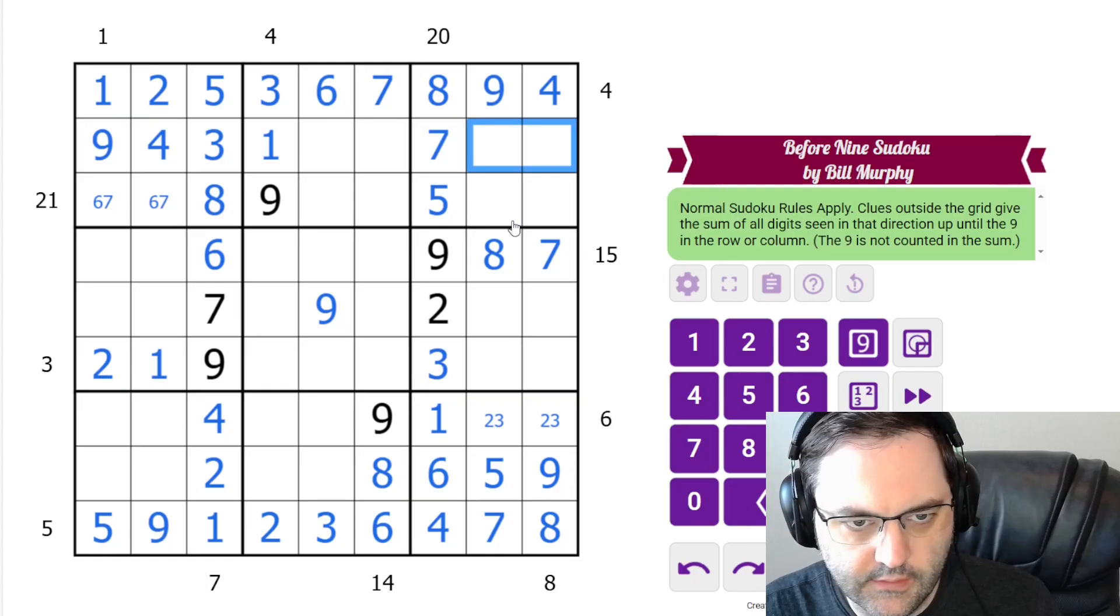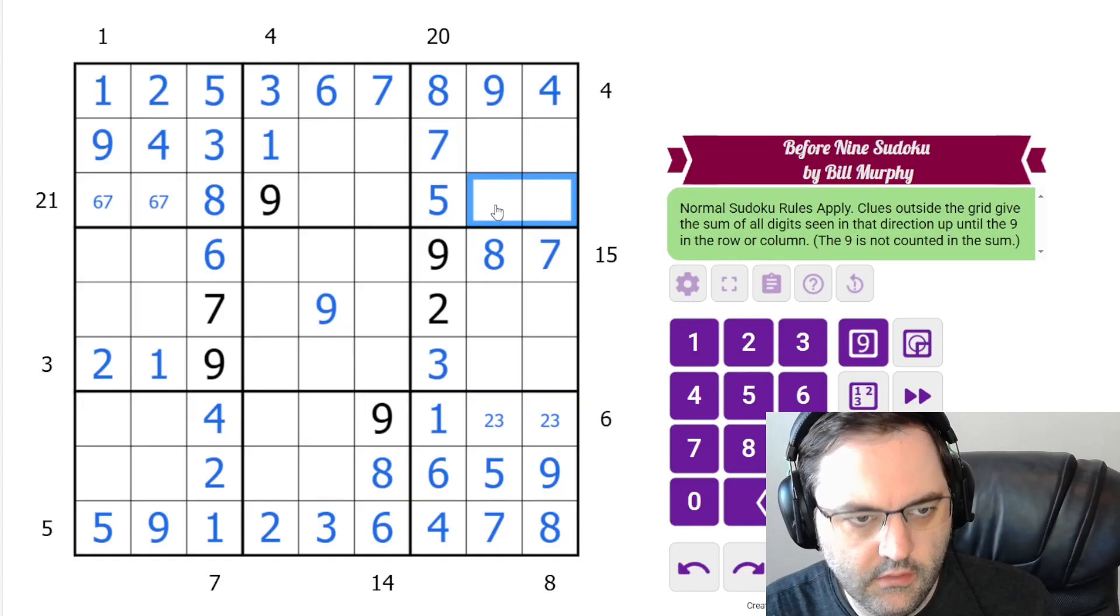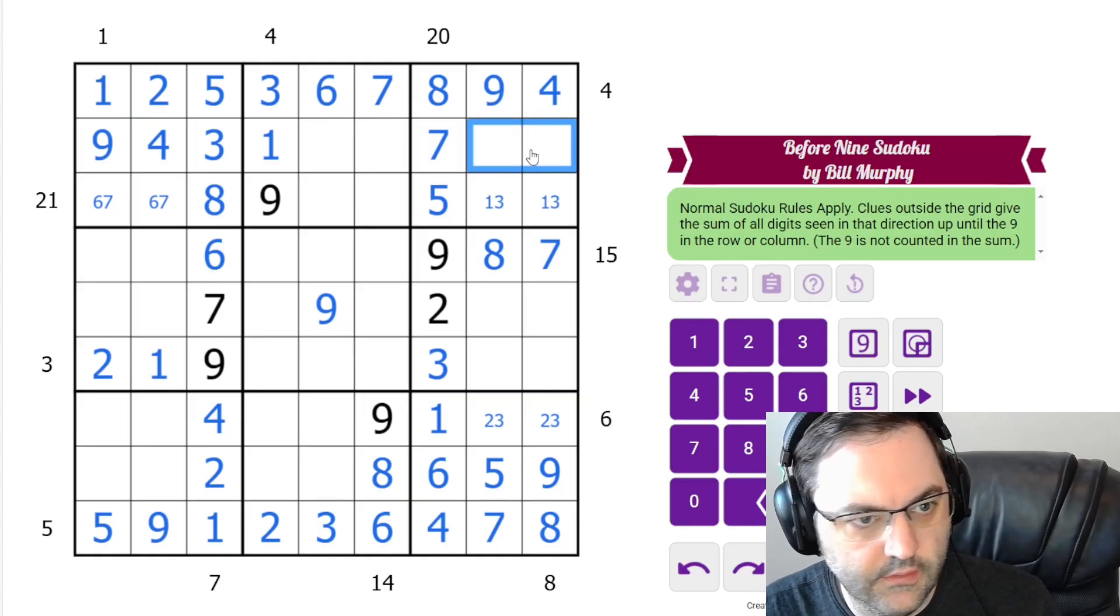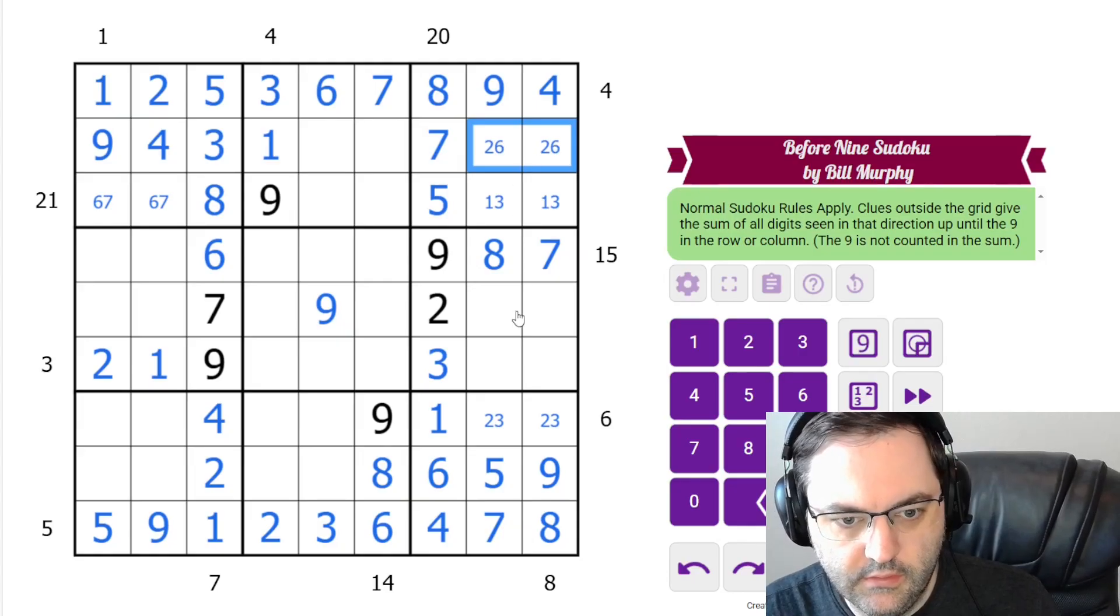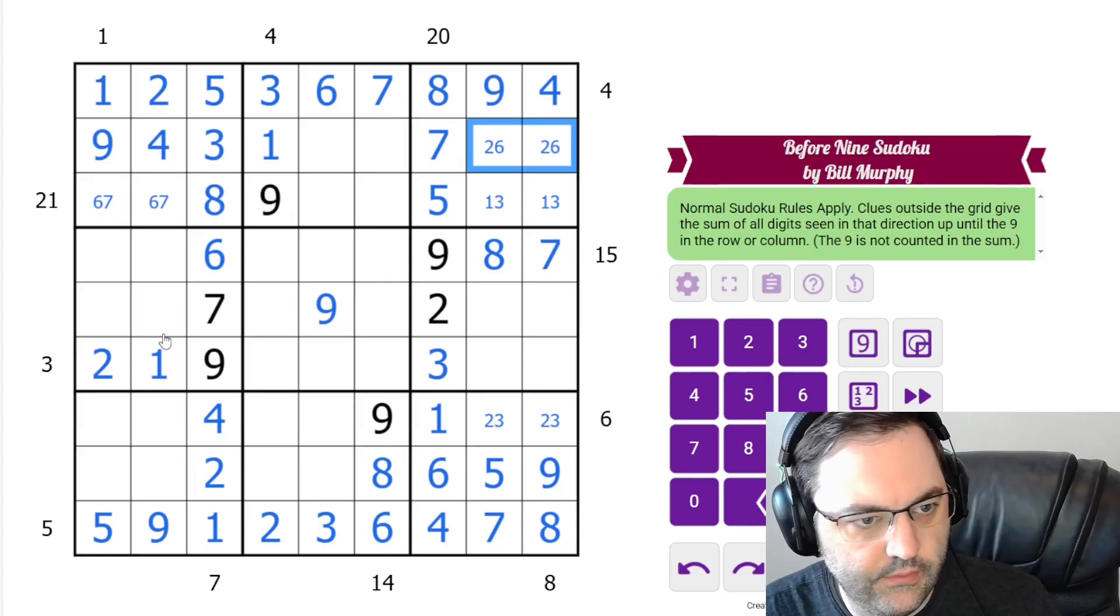We know we need 6 in one of these cells. What else do we need? We have 3 in one of these cells. We need a 1 in one of these cells. And so this will be 2, 6.